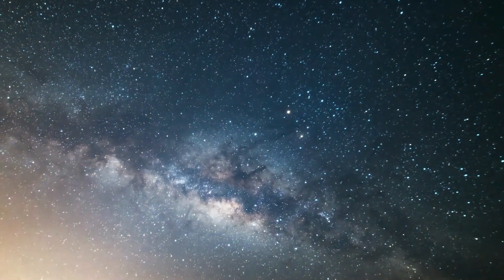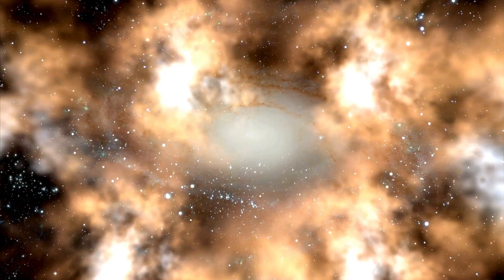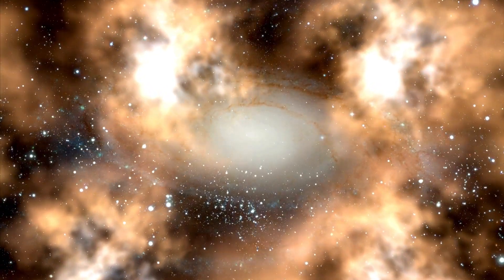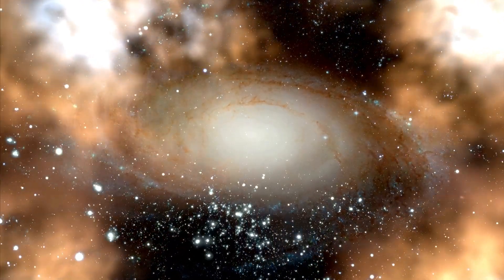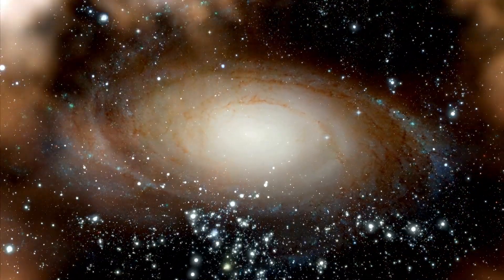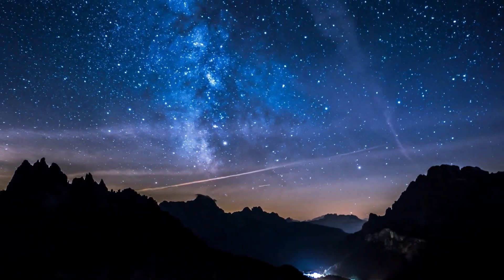In addition to gas giants, there are also Neptunian exoplanets, which have sizes similar to Uranus and Neptune. Among these are the hot Neptunes and small Neptunes, which are smaller and closer to their host stars than their gas giant cousins. These planets are often shrouded in mystery, with their atmospheres being difficult to study from afar.